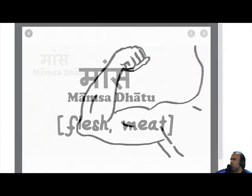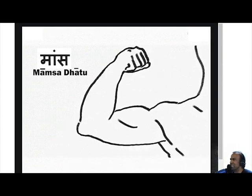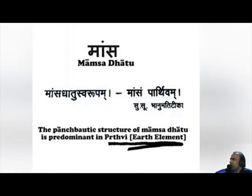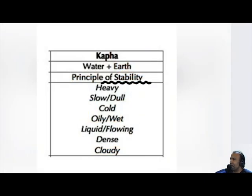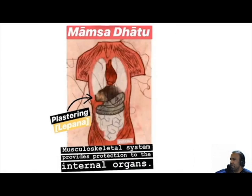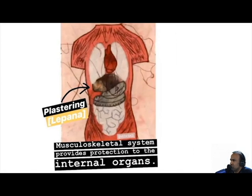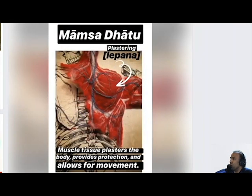Mumsadatu is that which most closely resembles muscular tissue, being predominantly of the earth element. Knowing that water and earth are Kapha in nature — Kapha being that which provides structure and support — the function of Mumsadatu is plastering and covering, which provides protection and support to the internal organs.